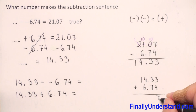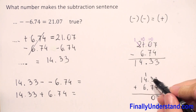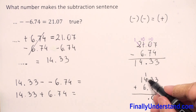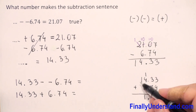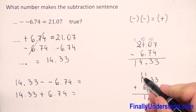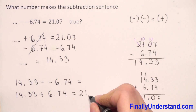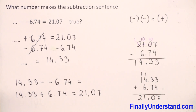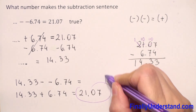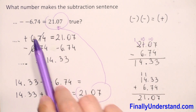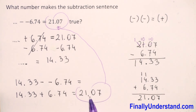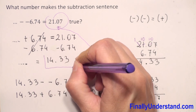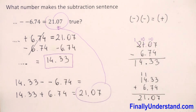3 plus 4 is 7. 3 plus 7 is 10, so we write 0 and carry 1. Copy the decimal point. 5 plus 6 is 11, write 1 and carry 1. 1 plus 1 is 2. We got 21.07, the same as what we had at the beginning. The left side equals the right side, so our solution is 14.33.